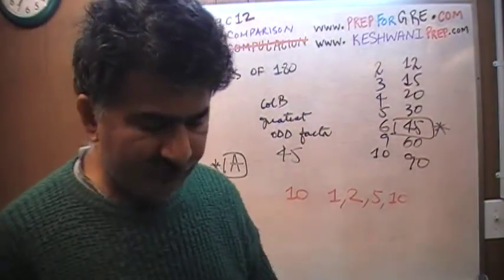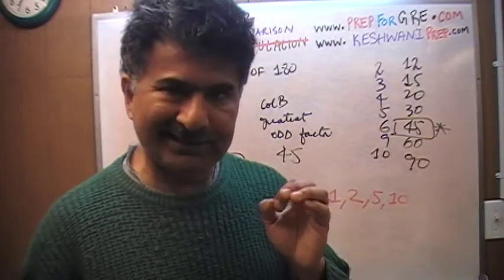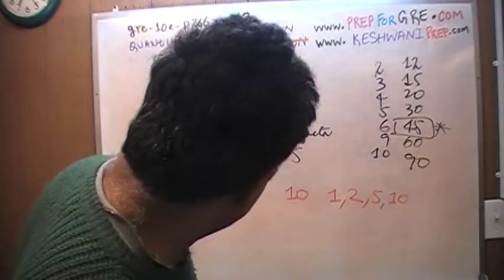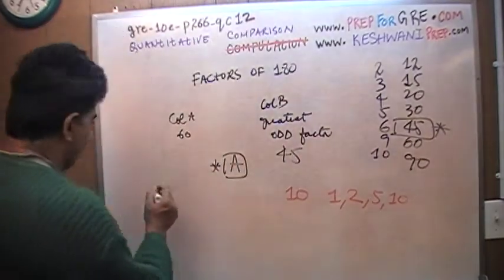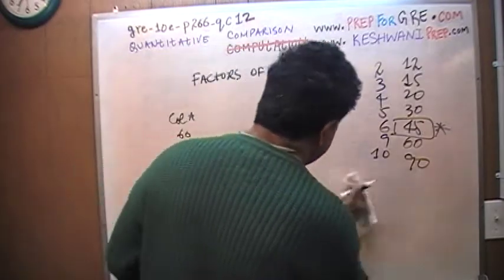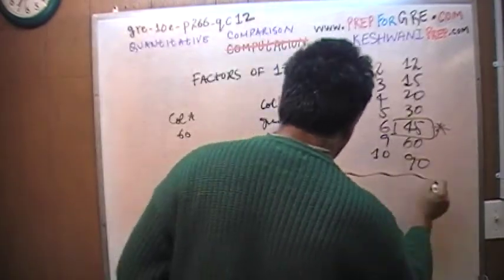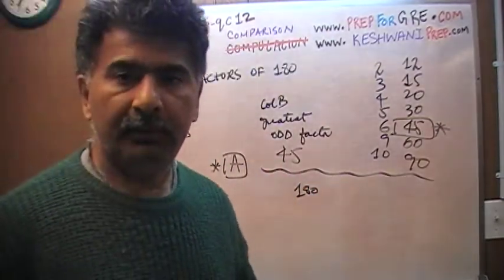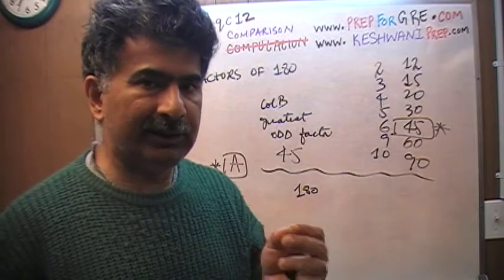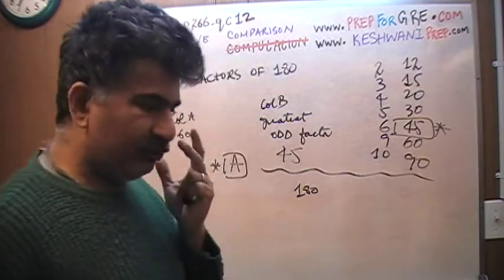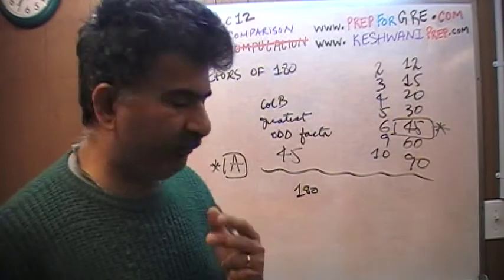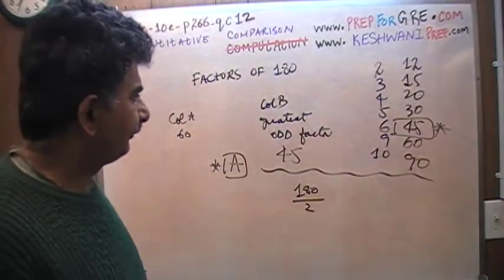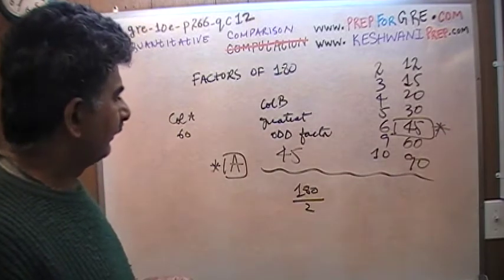In the first column it says, greatest even factor of 180 that is less than 90. We're dealing with 180, and since I'm looking for an even factor, the easiest and quickest way to find the greatest even factor of 180 is to divide 180 by the lowest even number that you can find.